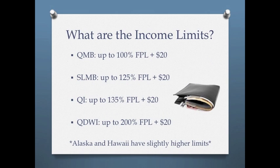Each MSP has unique income limits that vary from year to year. Twenty dollars of an applicant's monthly income is excluded when determining eligibility. For example, to qualify for QMB, an applicant's monthly income cannot exceed 100% of the federal poverty level plus $20.